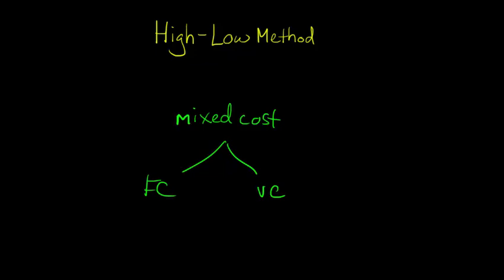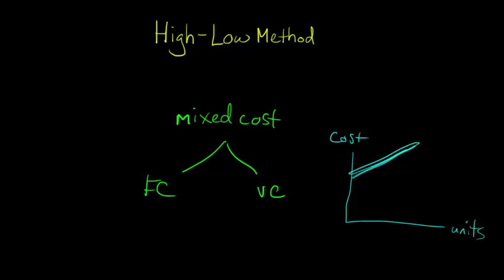If we think about how we would go about doing this, first we have to make one assumption to use the high-low method: that we have a linear relationship between the amount of activity — the number of units produced and so forth — and the amount of the cost. When I say linear relationship, I'm talking about a straight line. So we've got cost on one axis and activity level on the other, giving us a straight line.